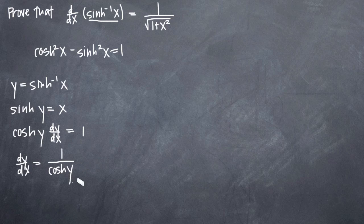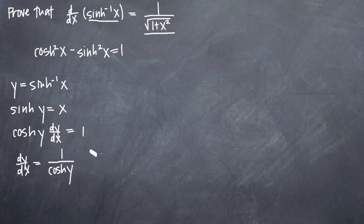We get dy/dx is equal to 1 divided by hyperbolic cosine of y. What we have now — 1 over hyperbolic cosine of y — is the derivative of inverse hyperbolic sine. We just need to get it in the same form as the right-hand side, which means changing the denominator from hyperbolic cosine of y to the square root of 1 plus x squared.